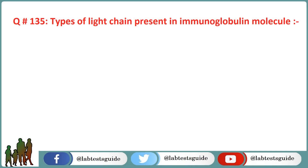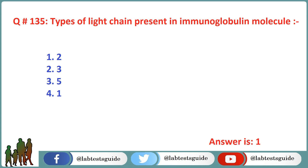Next question is 135: Types of light chains present in an immunoglobulin molecule? Option 1: 2. Option 2: 3. Option 3: 5. Option 4: 1. The correct answer is Option 1: 2 types.